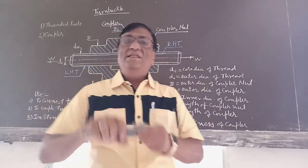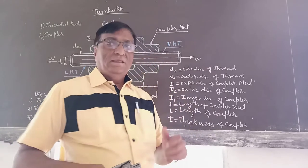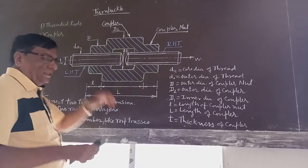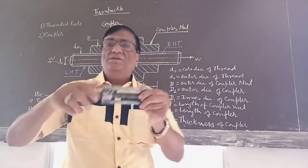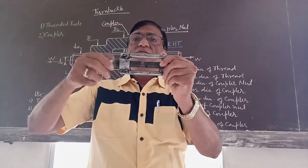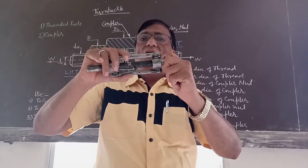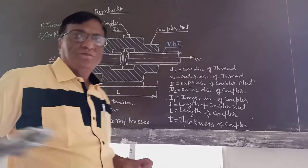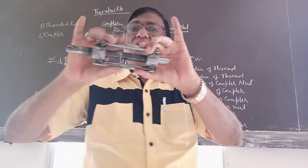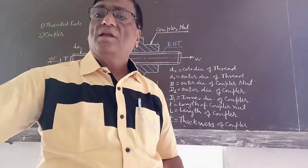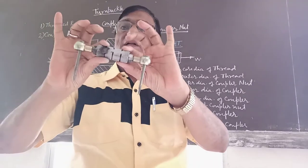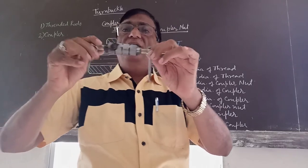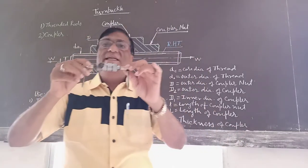Now we will study the different parts. The different parts of the turn buckle are the threaded rods. Threaded rods are there on either end. This is the coupler. And these are the tie rods — or you can say, connecting rods or threaded rods.